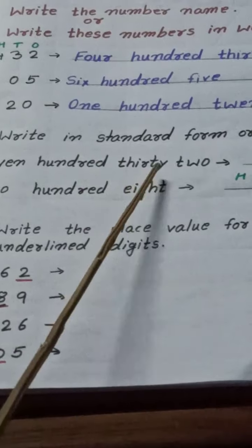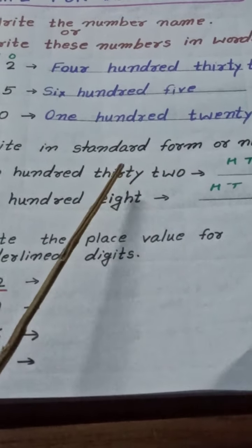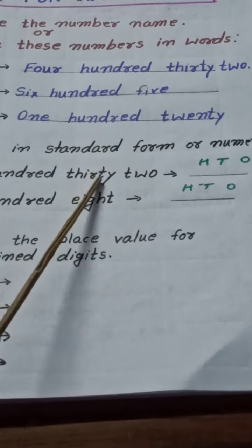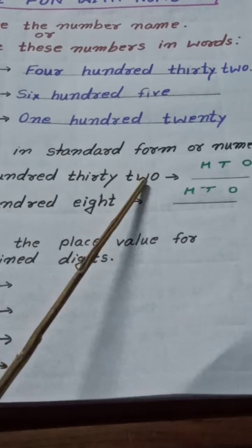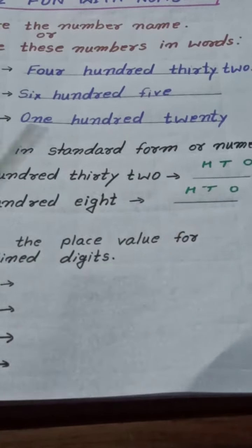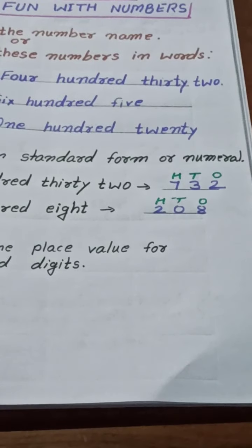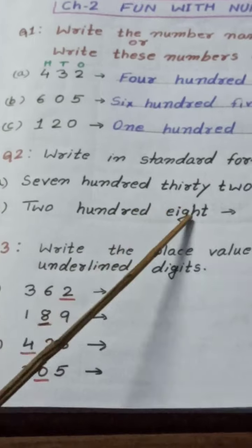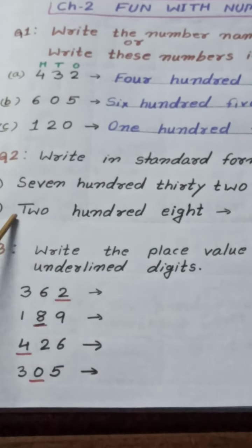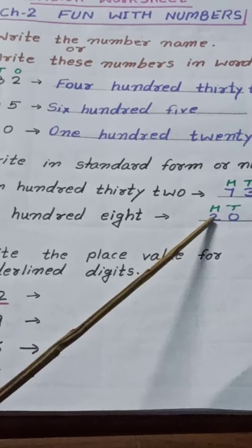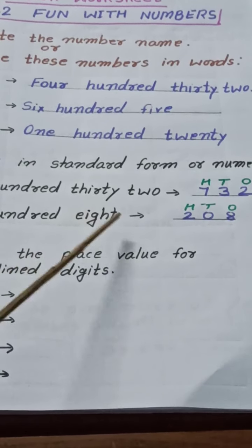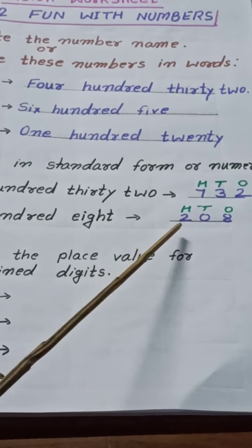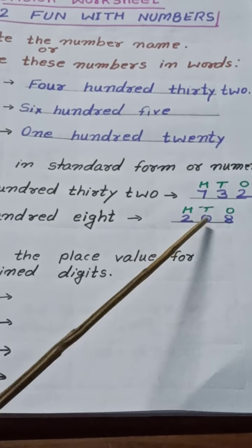Here is written 700, so 7 we will write on the 100s place. Then after, 32 — that means 30 and 2. 3 tens: 3 will stand on the tens place and 2 on the ones place. Same way, question B is 208. 2 is standing on the 100s place, so I have written 2. Then tens not given, directly given 8, so 8 will come on the ones place. The answer is 208.